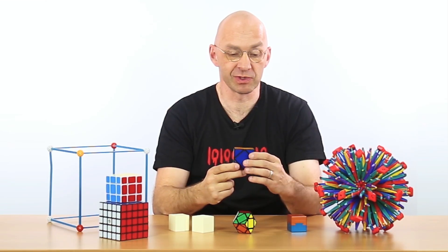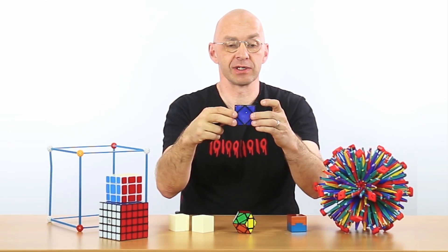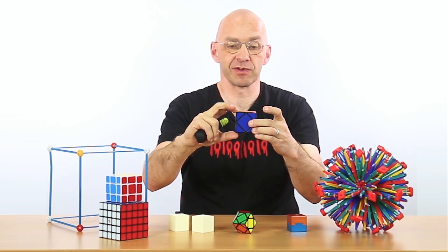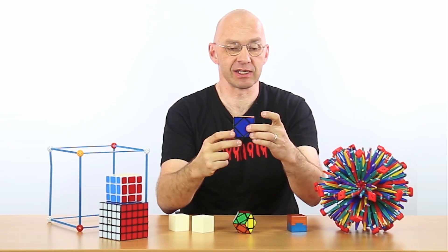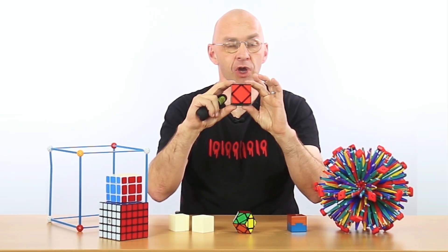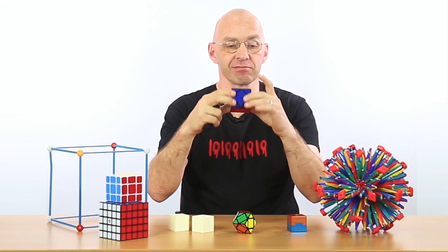Well, smallest possible height difference we definitely get when we orient the cube like this, just parallel to the ground, right? Then the height difference is just that. You can't get any smaller than this, obviously. What's the shadow? Well, the shadow is just a copy of this square face. Alright.